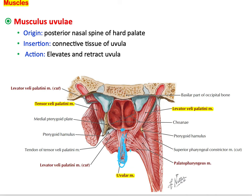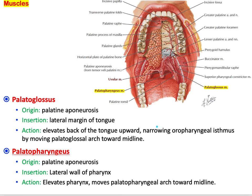The function of the musculus uvulae is to elevate and retract the uvula. If you say 'ah,' you will see the uvula move slightly upward and vibrate. This movement is a clinical test. Those were three of the five palatine muscles.